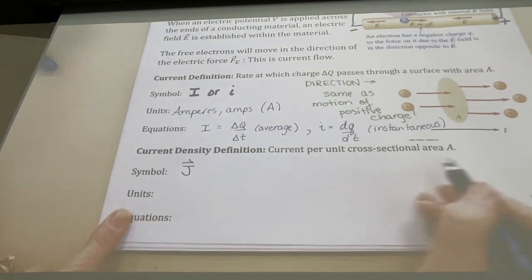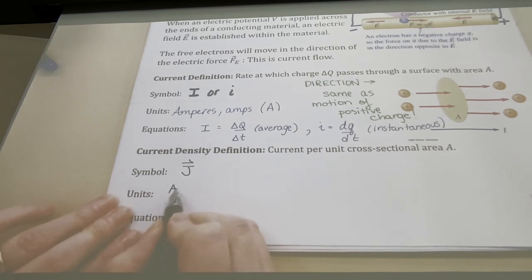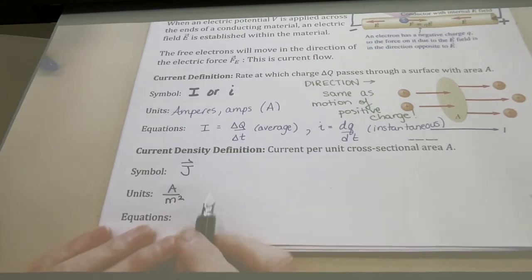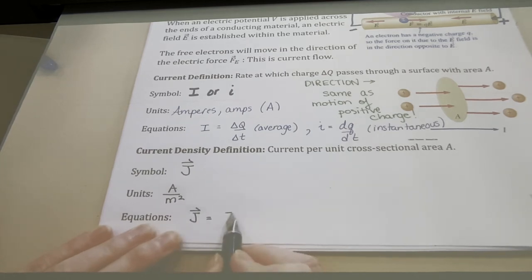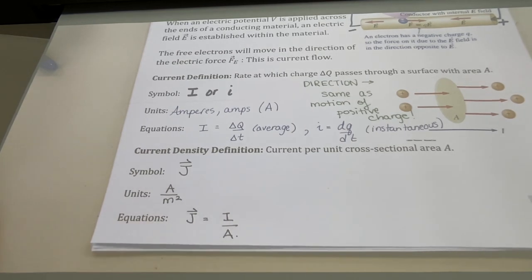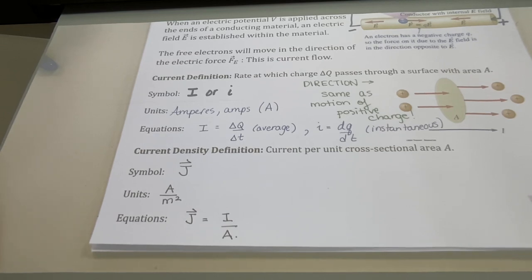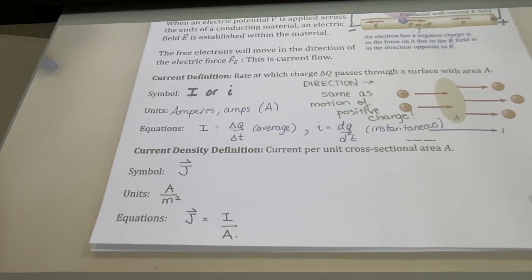Current was defined as the amount of charge passing through surface area A. Sometimes we're interested in that area specifically, which leads us to current density J, which is current divided by area — the current divided by the cross-sectional area A. Because current density is related to current, it also has a direction — the same as the current — and we do write this one with an arrow. The units are amps divided by meters squared. For DC circuits, current flows in one direction; later, after magnetism, we'll get to AC circuits.